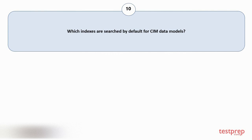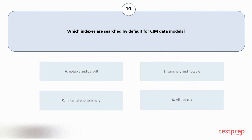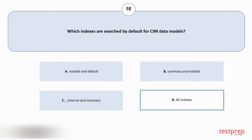Question number ten: which indexes are searched by default for CIM data models? Options are: A) notable and default, B) summary and notable, C) internal and summary, D) all indexes. The correct answer is option D.